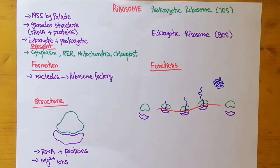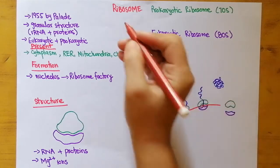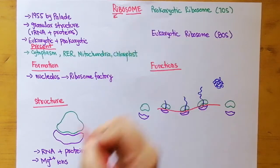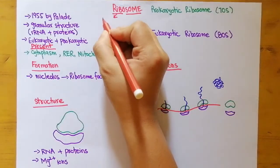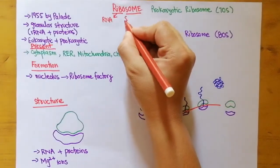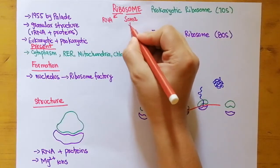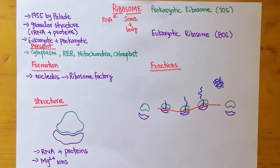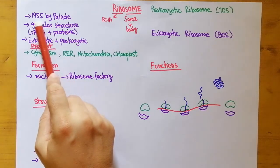Welcome back learners. Today's lesson is about ribosomes — we will study the structure, function, composition, and location. The word 'ribosome' is made up of two words: 'ribo' and 'som.' 'Ribo' stands for ribonucleic acid, known as RNA, while 'som' comes from the Greek word 'soma' meaning body. In other words, a ribosome is actually a body consisting of RNA. Ribosomes were first discovered in 1955 by Palade.